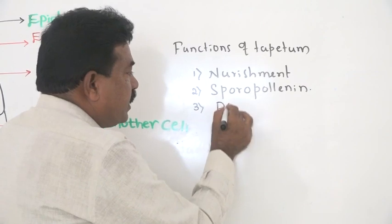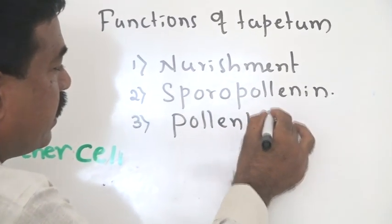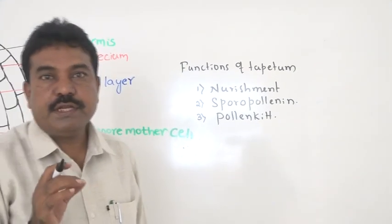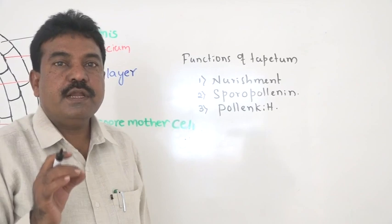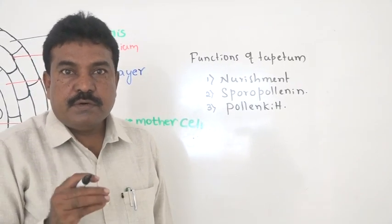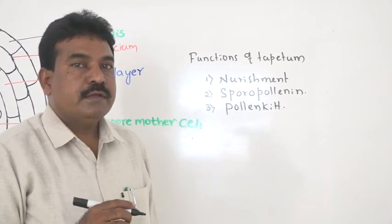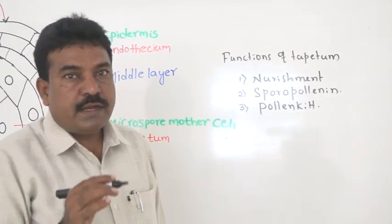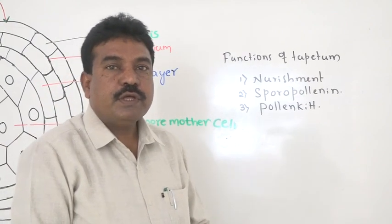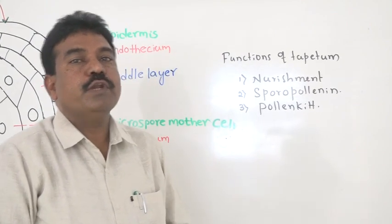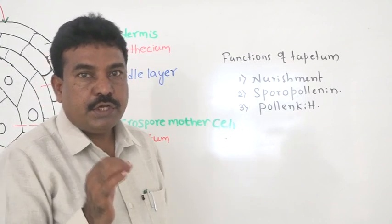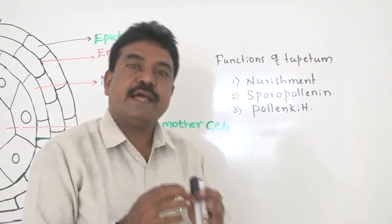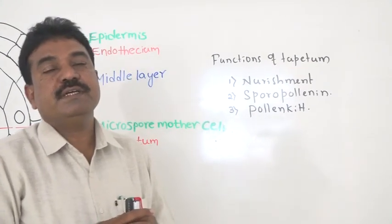The tapetum also secretes a sticky substance called pollen kit. Pollen kit is mainly found in entomophilous flowers — flowers which are pollinated by insects. The pollen grains of entomophilous flowers are covered by pollen kit, which is a yellow-colored, viscous, sticky substance that helps pollen grains attach to the bristles of the insect body. Bristles are hair-like processes present on the insect body.